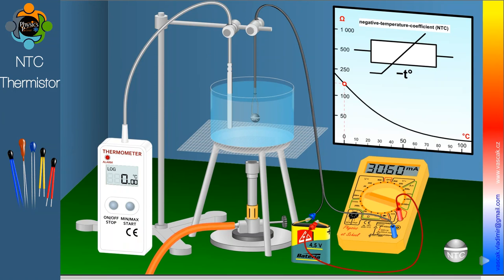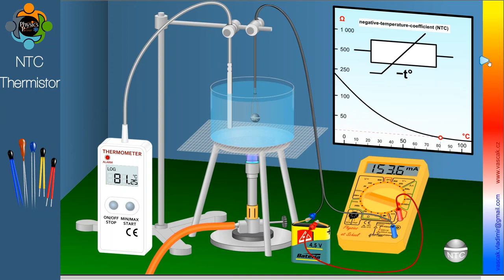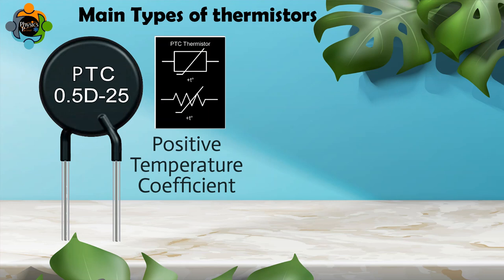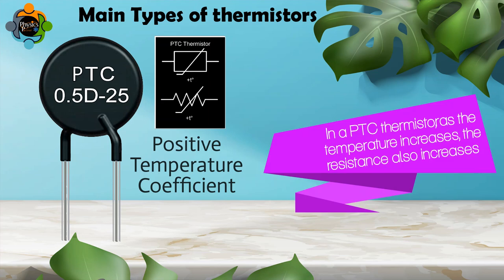At zero degrees Celsius, the resistance of the thermistor is 200 ohms and the current is 30.60 milliamperes. As we gradually increase the temperature, the resistance decreases, reaching its minimum at 100 degrees Celsius. At this temperature, the current is at its maximum: 160.4 milliamperes.